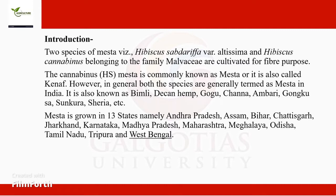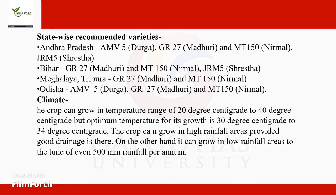In India, mesta is also known as bimli, deccan hemp, and gago chana, etc. Mesta is grown in 13 states, namely Andhra Pradesh, Assam, Bihar, Chhattisgarh, Karnataka, Madhya Pradesh, Maharashtra, and others. There are different state-wise recommended varieties which are grown from state to state.